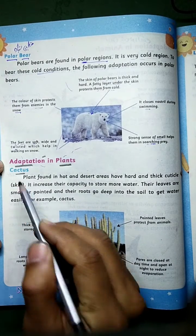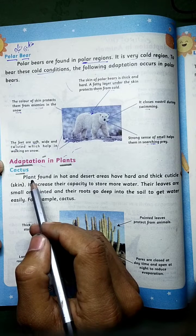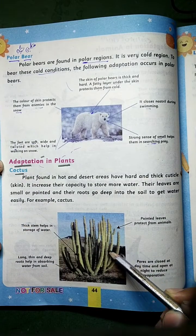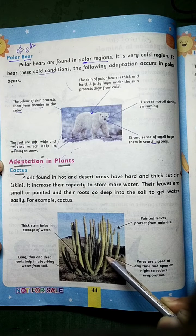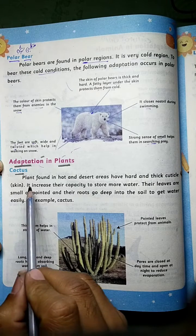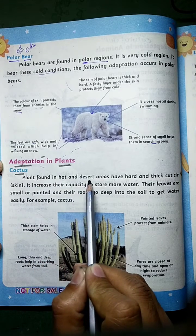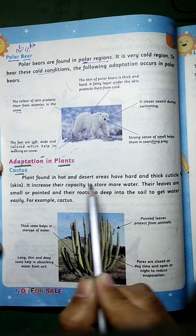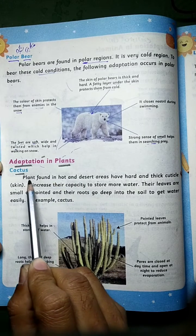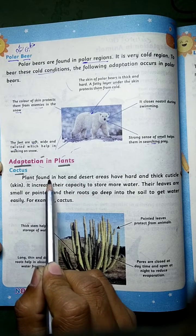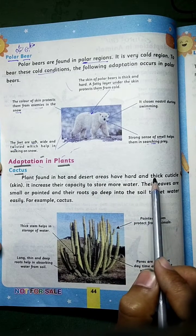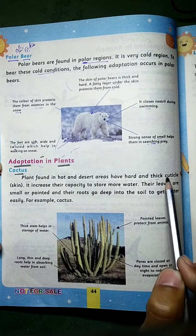For example, cactus — you will mostly find cactus in desert areas, in the Sahara. Plants found in hot and desert areas have a hard and thick cuticle skin. Plants found in hot and desert areas — the poudhe jo milte hain garam aur saharai ilaqon mein — have a hard, strong, and thick cuticle skin.